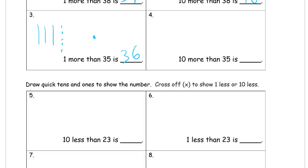And now ten more than 35. So that's ten, twenty, thirty, one, two, three, four, five. Here's our ten more. And if we were to count it all, we'd have ten, twenty, thirty, forty — and then this is still five, so it's forty-five.